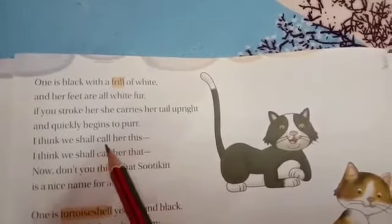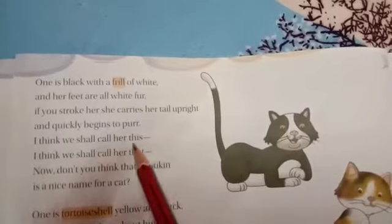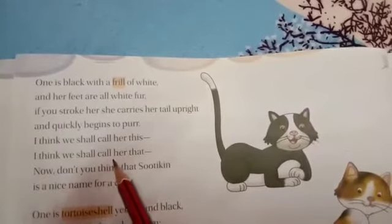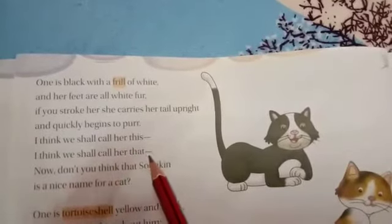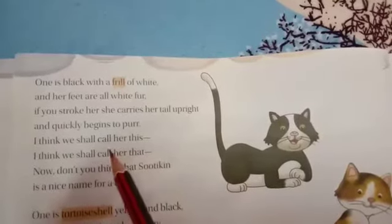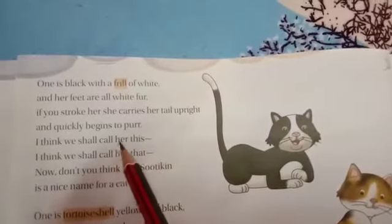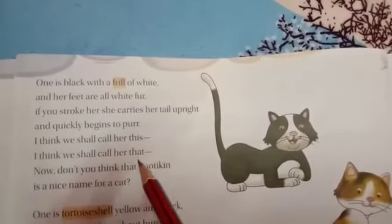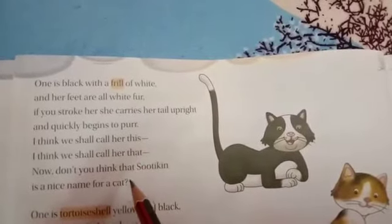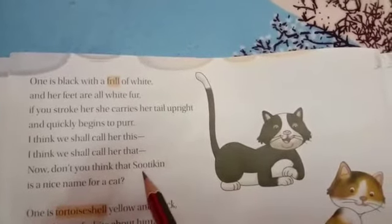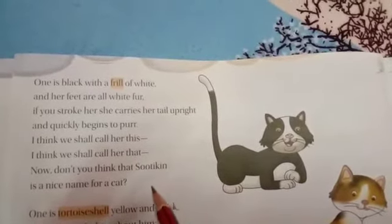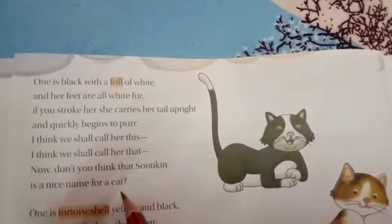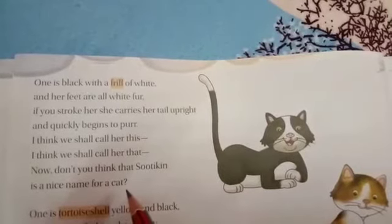I think we shall call her this, I think we shall call her that — the poet is again thinking of a name for this second kitten.